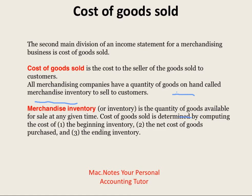The cost of goods sold is determined by computing how much inventory I had at the beginning of this accounting period, plus the total cost of all goods purchased during the year. Those two together comprise the amount available for sale. Then at the end of the year, I subtract what I have left unsold, and that difference is the cost of goods sold.